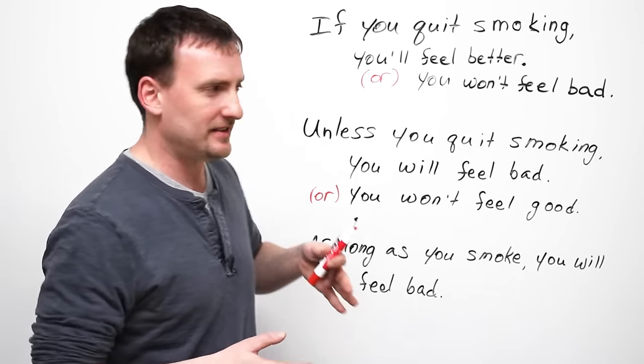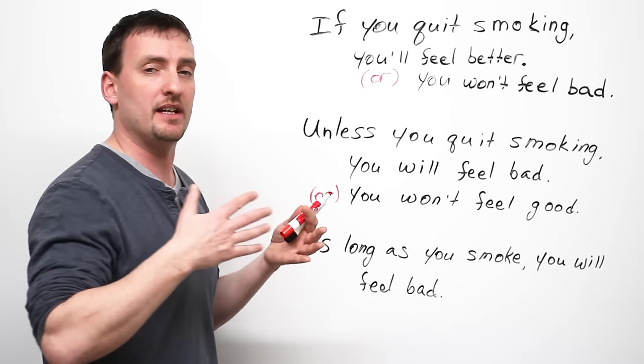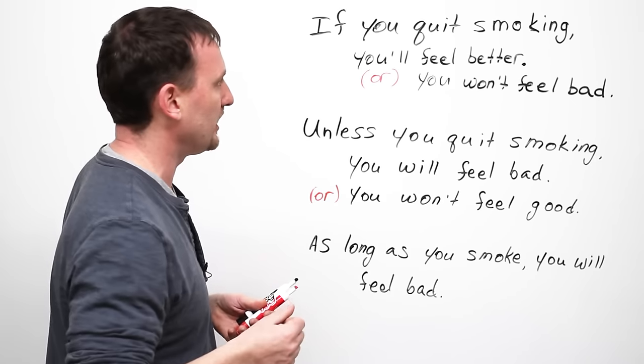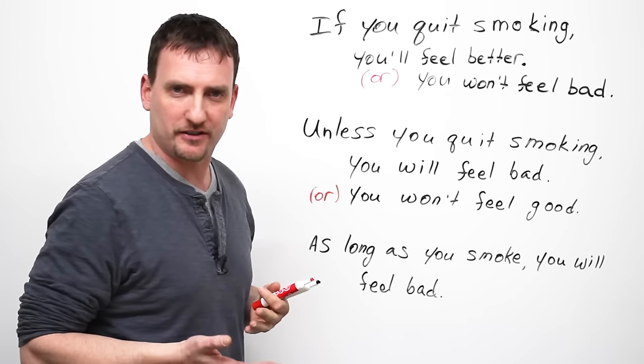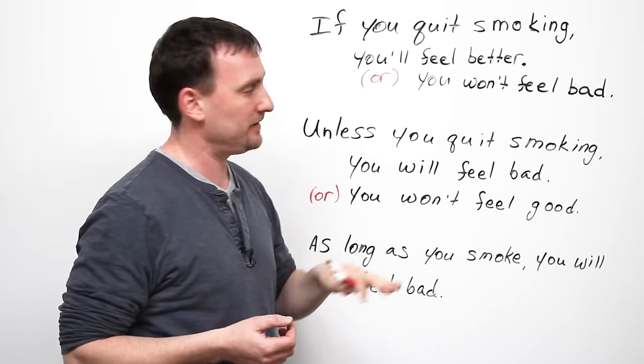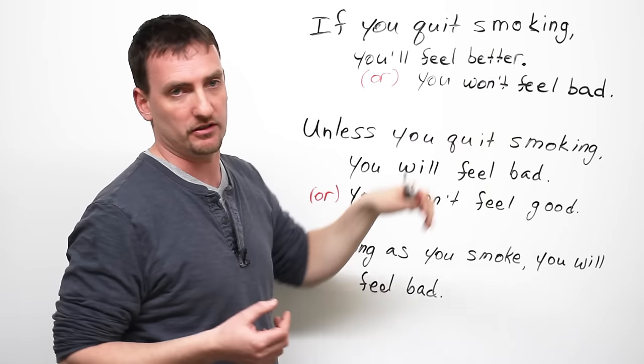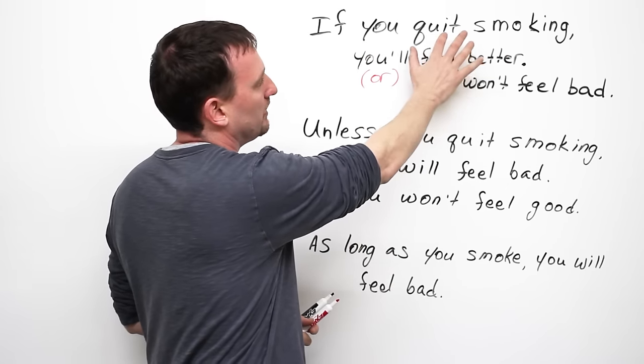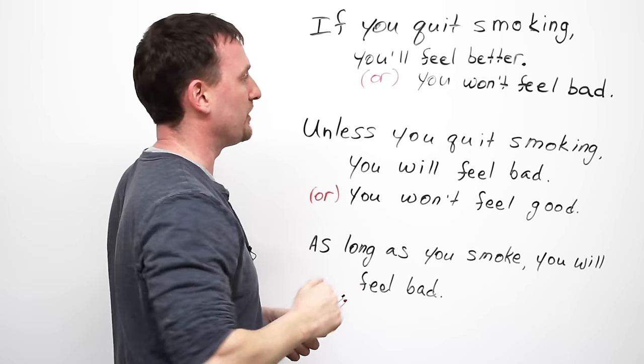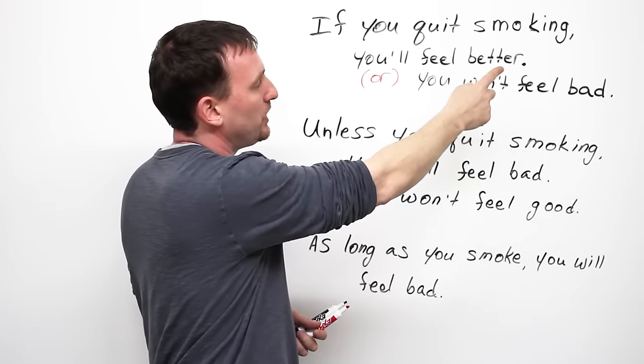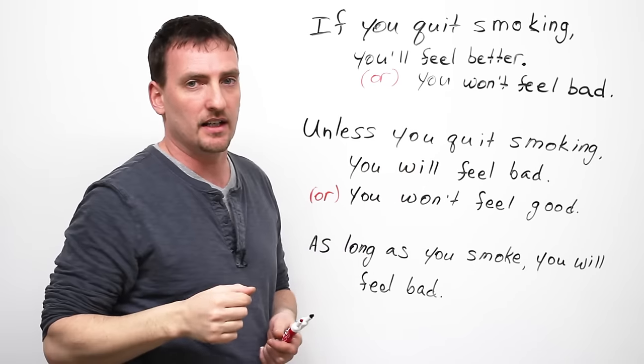Okay. So here we have some sentences. Let's go through each one. And I'll make the changes to the negatives as I go along. If you quit smoking, for all you smokers out there, if you quit smoking, you will feel better. If, subject, verb, will, verb, positive verb, et cetera. Or if you quit smoking, you won't feel bad.